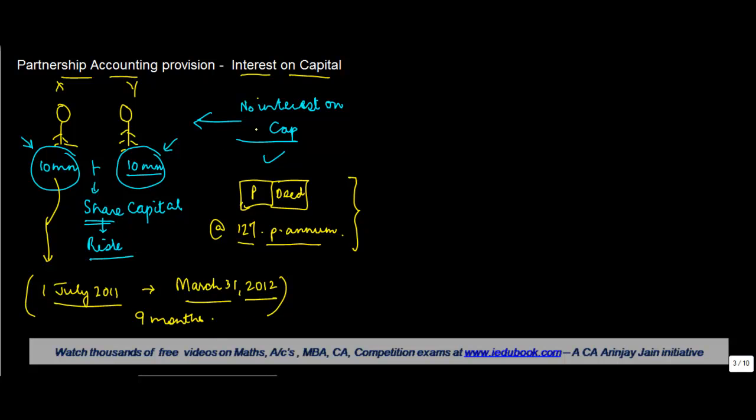So whenever you have to calculate interest on capital, the point you have to see is what is the period for which the business has used this money. If it's for nine months, then what do you do? You multiply 10 million, which is the principal. What was the interest formula you learned in mathematics? It was Principal × Rate × Time. My principal is 10 million, my rate is 12%, so 12/100, and time is 9 months.